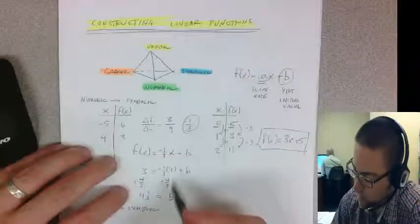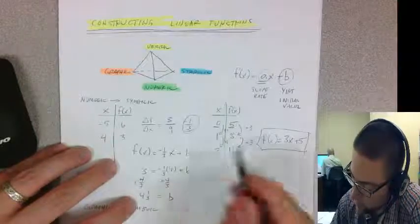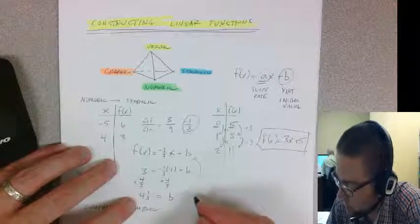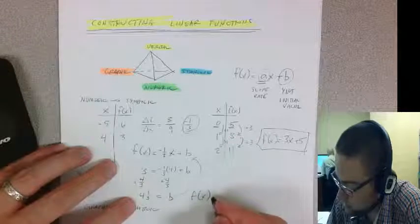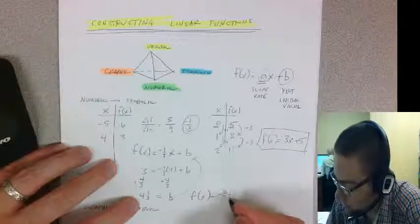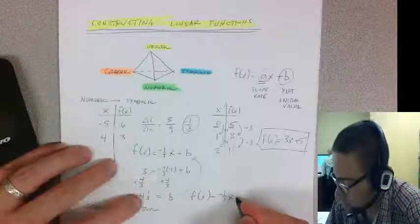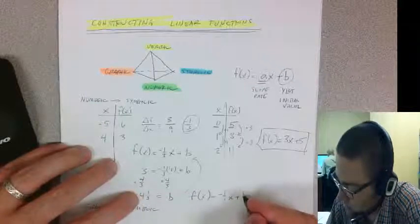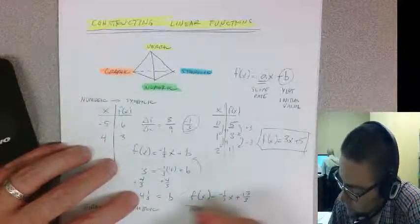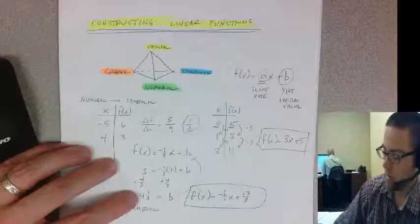Now I can rewrite my function. I have my b value, so I plug it in: f(x) = -1/3 x + 4 1/3, or I could write it as 13/3 as an improper fraction.